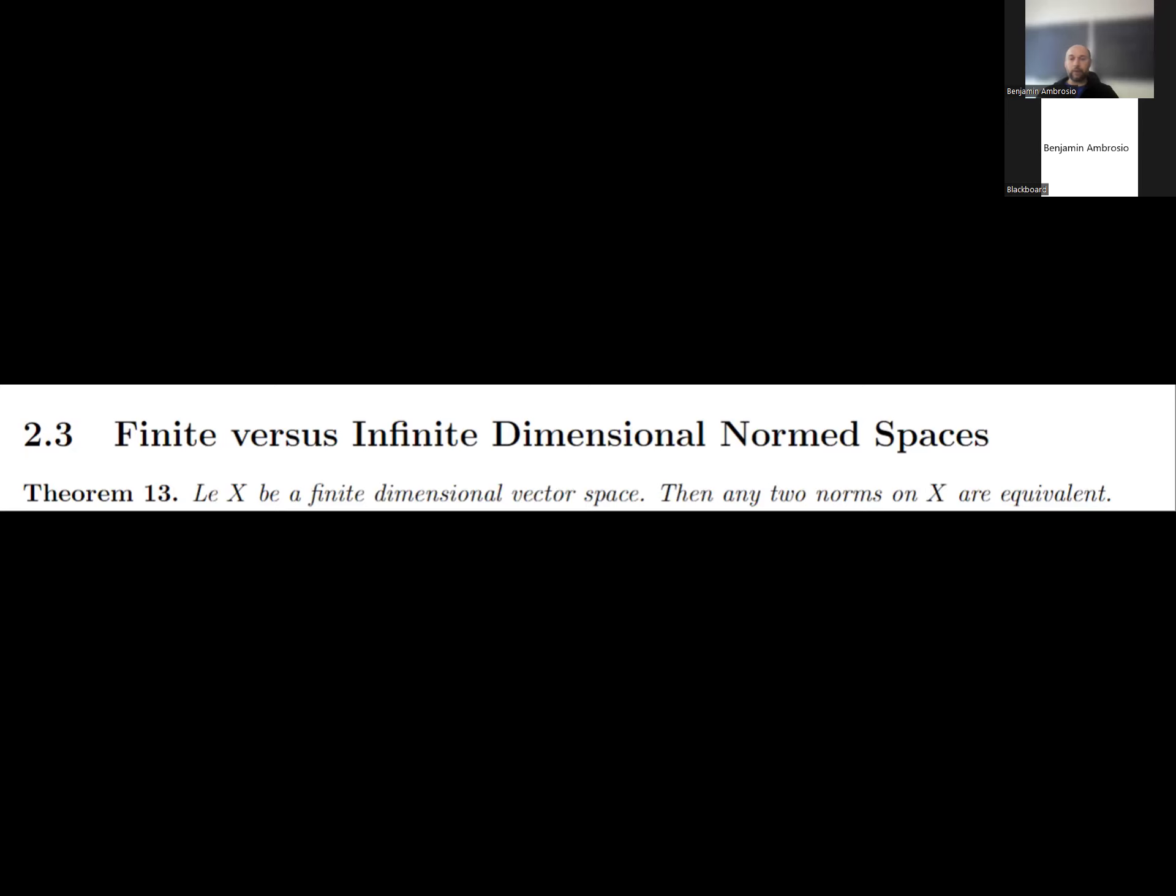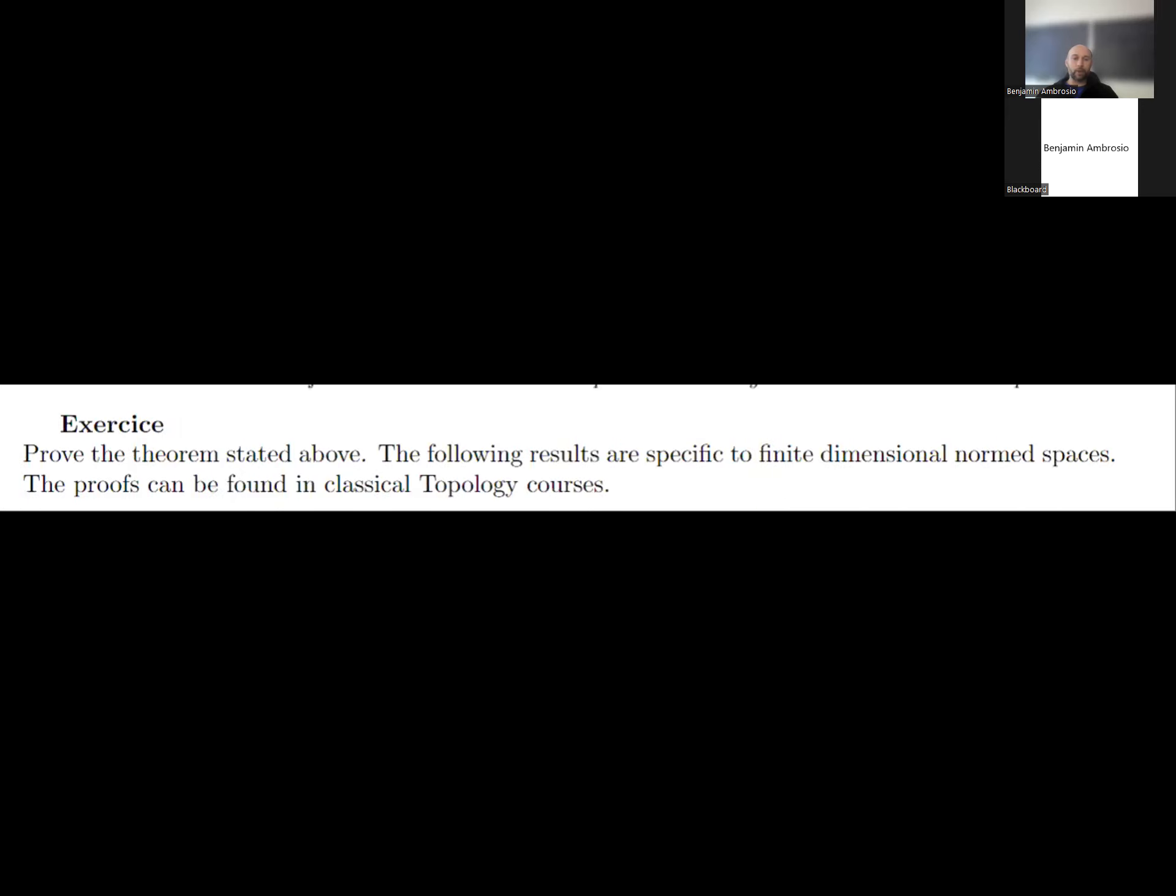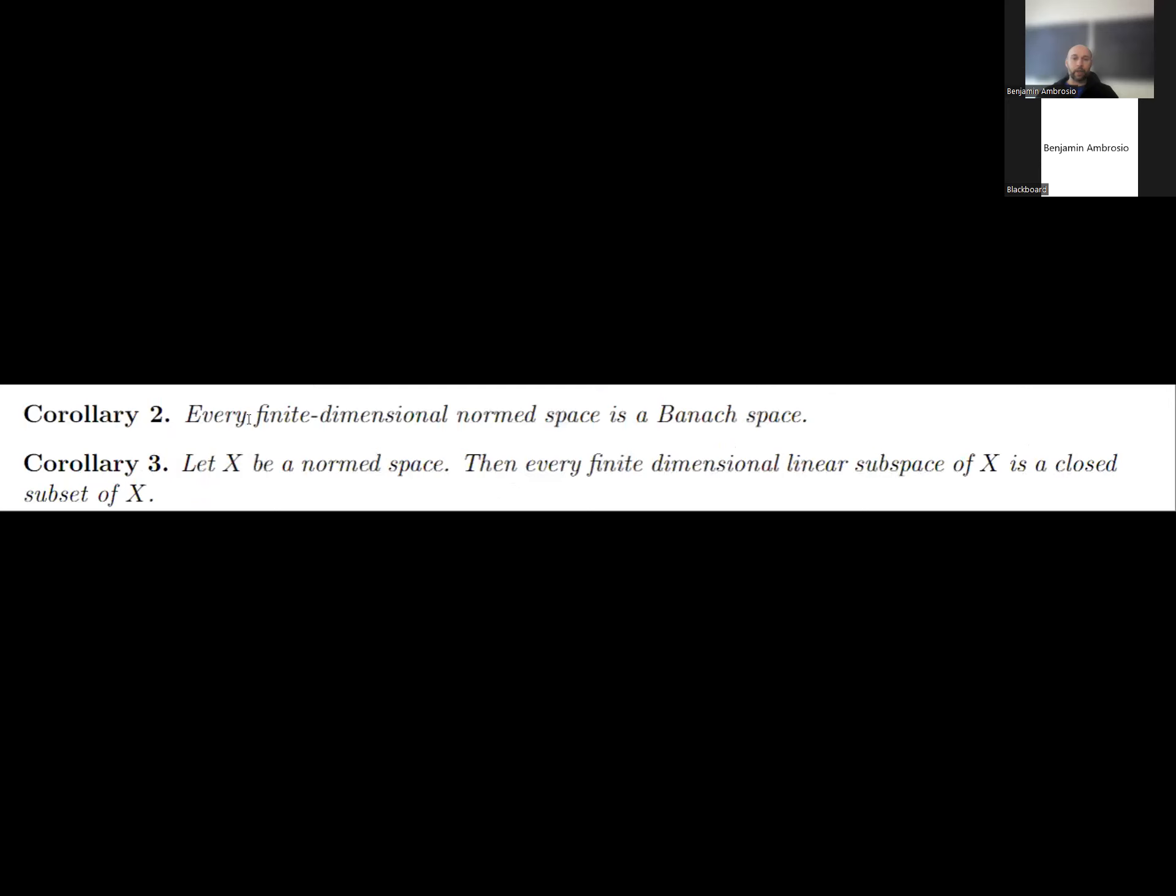When you have a finite dimensional vector space, then two norms on X are always equivalent. Every finite dimensional normed space is a Banach space. Every finite dimensional linear subspace of a normed space is closed.